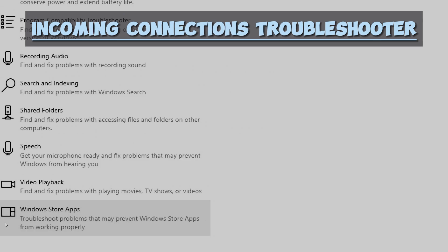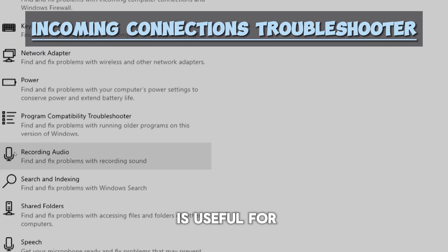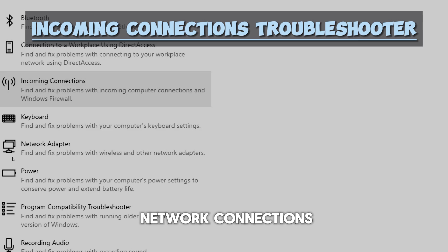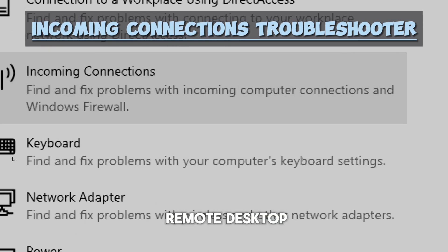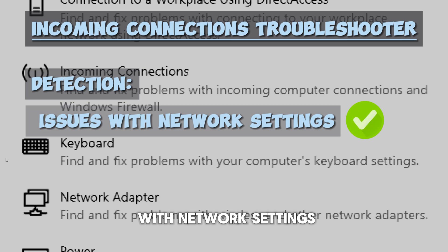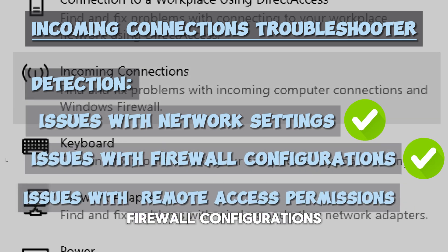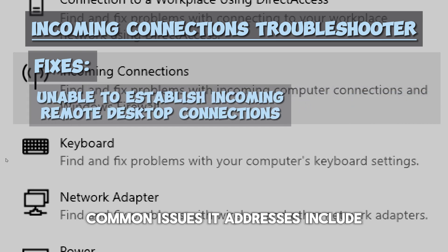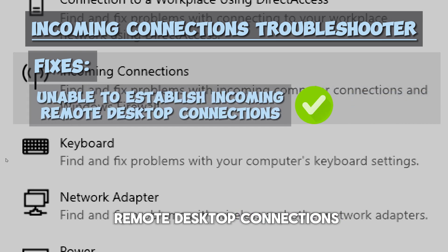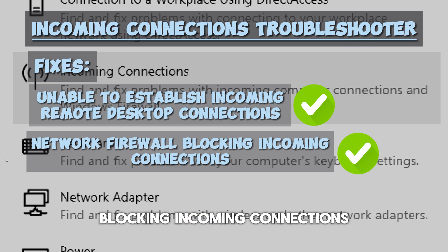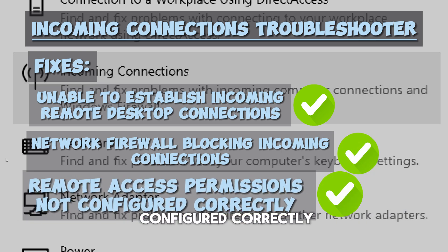The Incoming Connections troubleshooter is useful for diagnosing problems with incoming network connections, particularly for features like remote desktop. It can detect issues with network settings, firewall configurations, and remote access permissions. Common issues it addresses include unable to establish incoming remote desktop connections, network firewall blocking incoming connections, and remote access permissions not configured correctly.